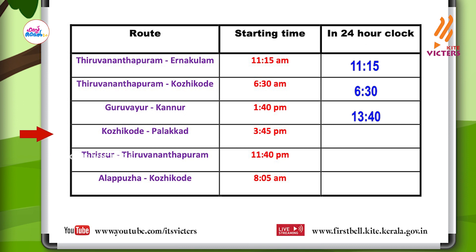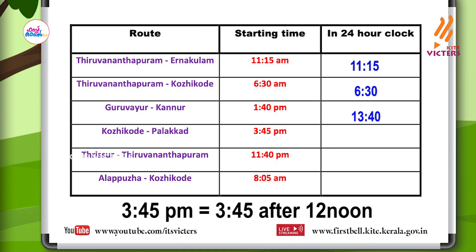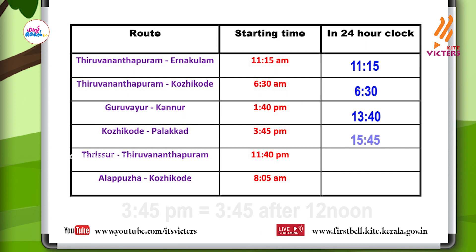Look at the fourth one: Kozhikod–Palakkad bus. The starting time is three forty-five PM. How do we write it in twenty-four hour clock? Three forty-five PM means three forty-five after twelve noon. So the time in twenty-four hour clock is fifteen forty-five.